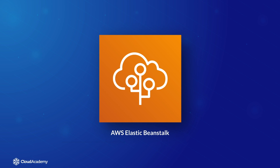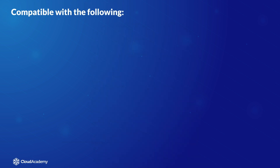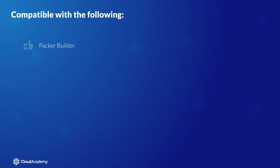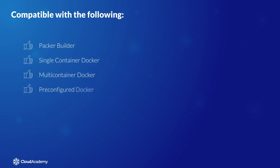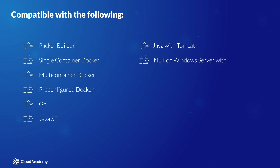Currently, at the time of writing this course, Elastic Beanstalk is compatible with the following: Packer Builder, Single-Container Docker, Multi-Container Docker, Pre-Configured Docker, Go, Java SE, Java with Tomcat, .NET on Windows Server with IIS, Node.js, PHP, Python, and Ruby.